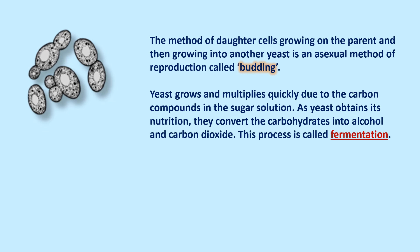As yeast obtains its nutrition, it converts carbohydrates into alcohol and carbon dioxide — this process is called fermentation. If yeast is put in sugar solution with warm water, it gets nutrition, starts growing and multiplying by budding — new buds form, daughter cells form, the bud falls off, and it keeps growing. As it multiplies, it converts carbohydrates into alcohol and carbon dioxide.